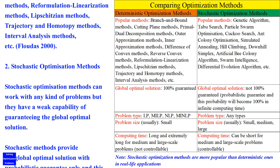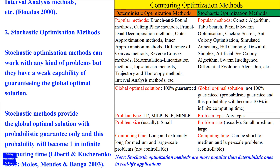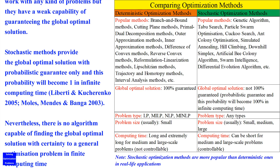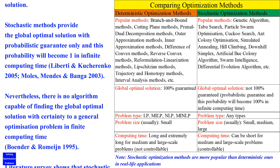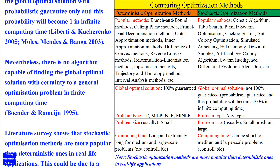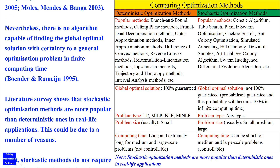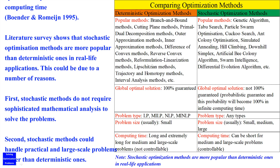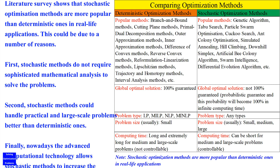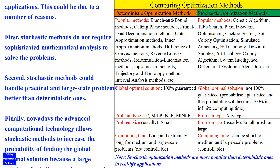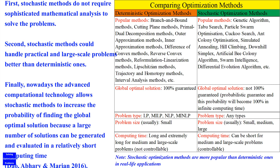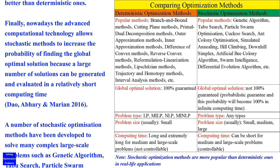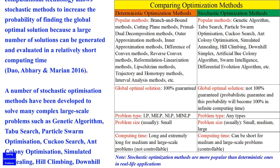Stochastic optimization methods can work with any kind of problems, but they have a weak capability of guaranteeing the global optimal solution. Stochastic methods provide the global optimal solution with probabilistic guarantee only, and this probability will become one in infinite computing time. Nevertheless, there is no algorithm capable of finding the global optimal solution with certainty to a general optimization problem in finite computing time. Literature survey shows that stochastic optimization methods are more popular than deterministic ones in real-life applications. This could be due to a number of reasons. First, stochastic methods do not require sophisticated mathematical analysis to solve the problems. Second, stochastic methods could handle practical and large-scale problems better than deterministic ones. Finally, nowadays the advanced computational technology allows stochastic methods to increase the probability of finding the global optimal solution, because a large number of solutions can be generated and evaluated in a relatively short computing time.